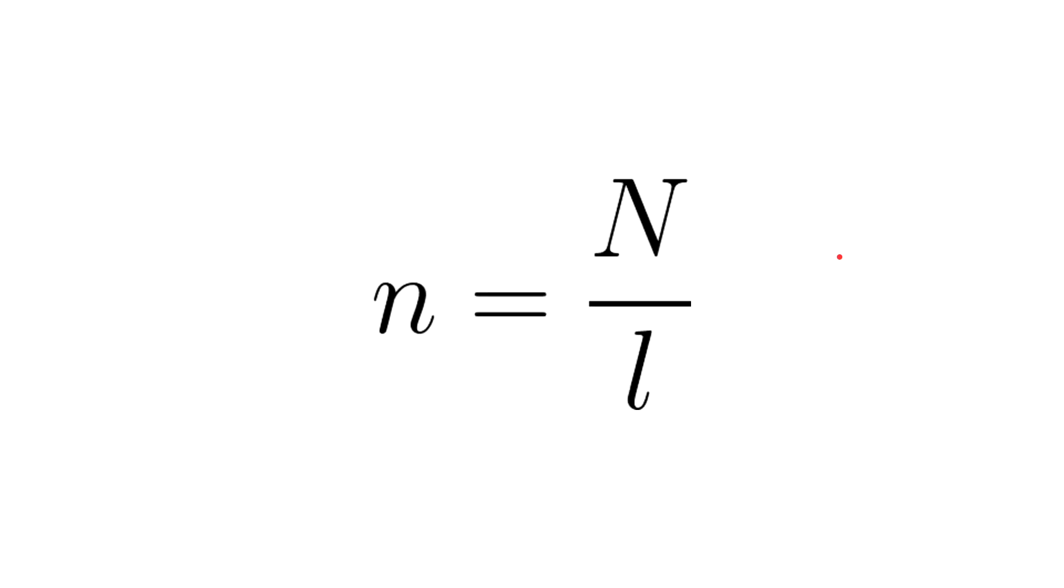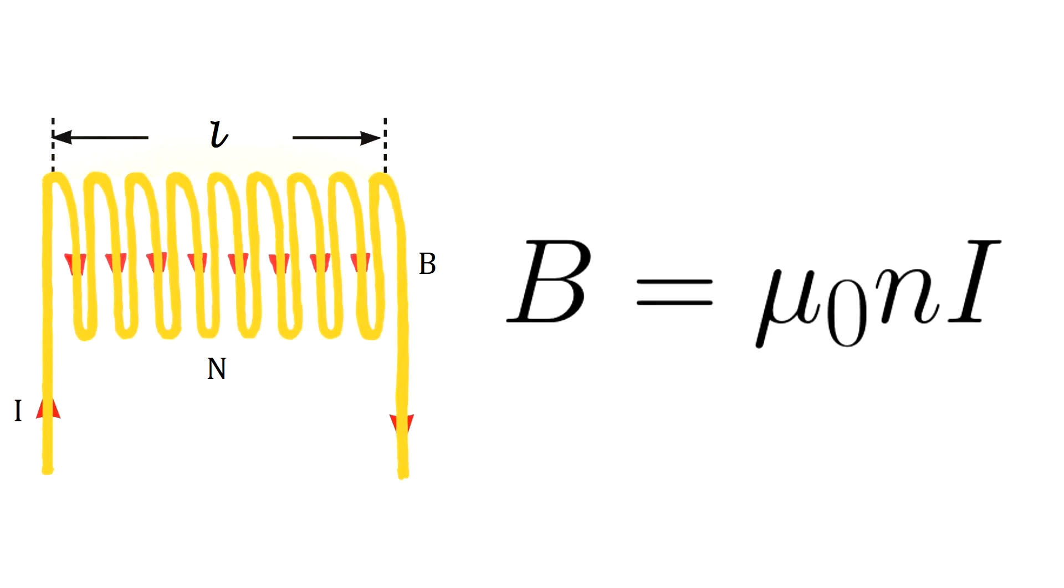N over l is the number of turns per unit length and can be represented by small n, which is sometimes called turns density. So the relationship can be expressed as follows.